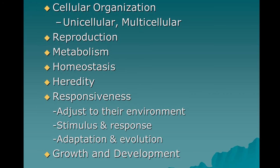Cell organization — all living things are made up of cells. That is one of the things we call the cell theory, one of the parts of the cell theory. There are actually six components of the modern cell theory; there used to be three.